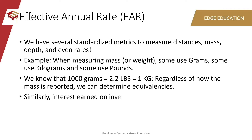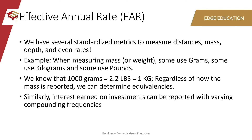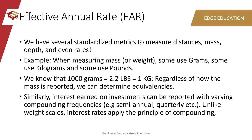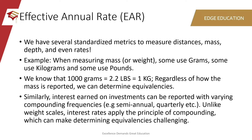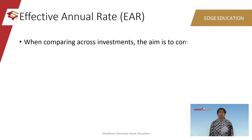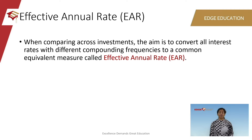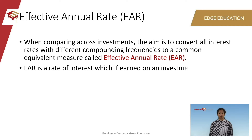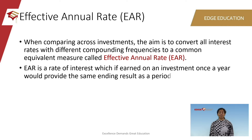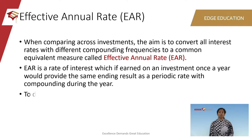Similarly, interest rates on various investments can be reported with varying compounding frequencies — semi-annual, quarterly. Unlike weighing scales, interest rates apply the concept of compounding, which can make determining equivalencies a little bit more challenging. When comparing across investments, the aim is to convert all interest rates with different compounding frequencies to a common equivalent measure called Effective Annual Rate, EAR. EAR is a rate of interest which, if earned on an investment once a year, would provide the same ending result as a periodic rate with compounding during the year.